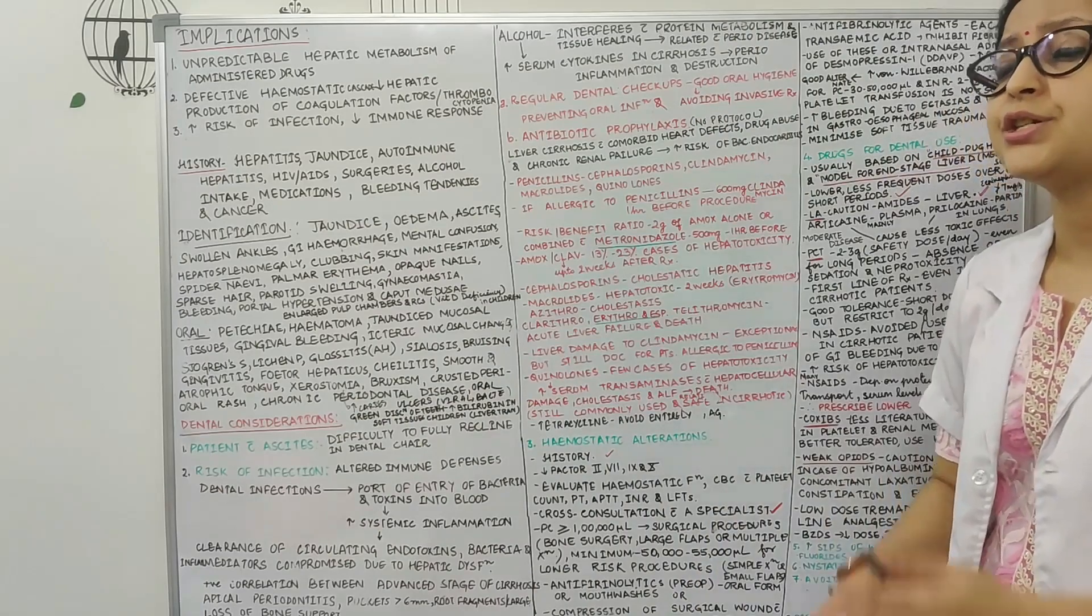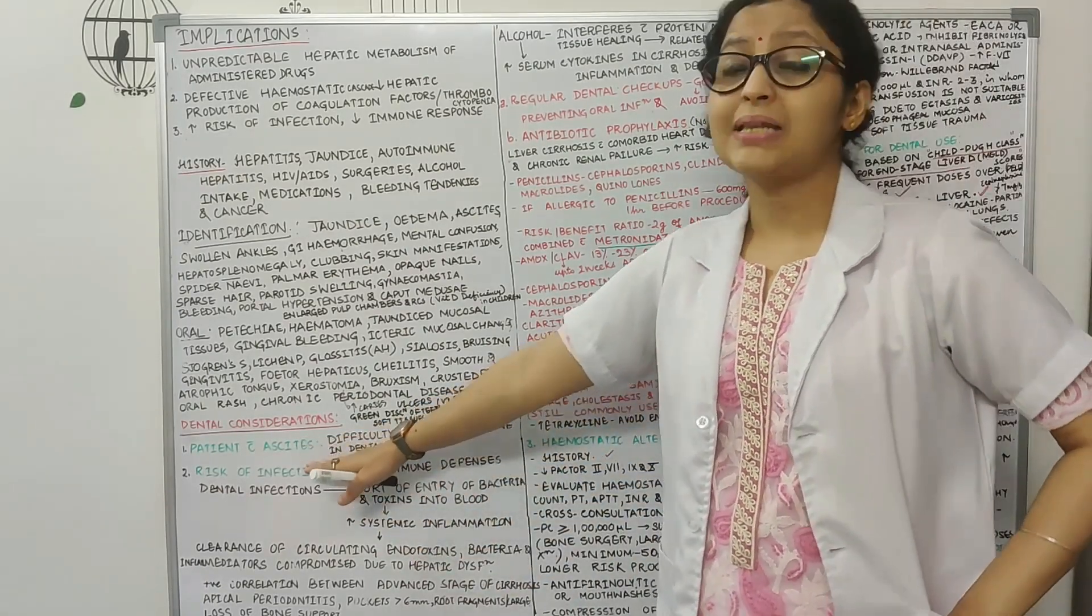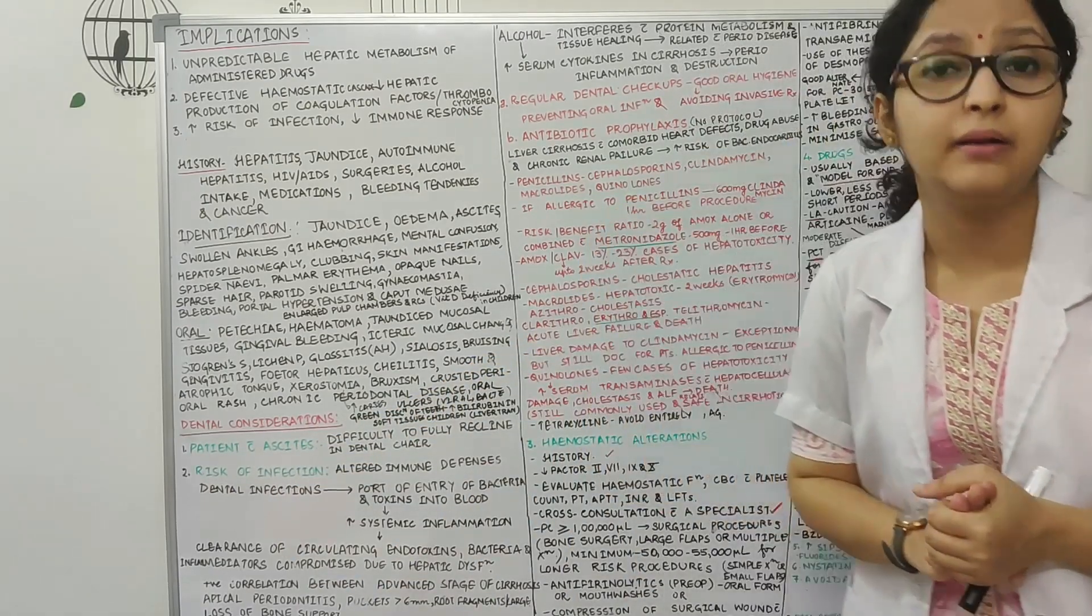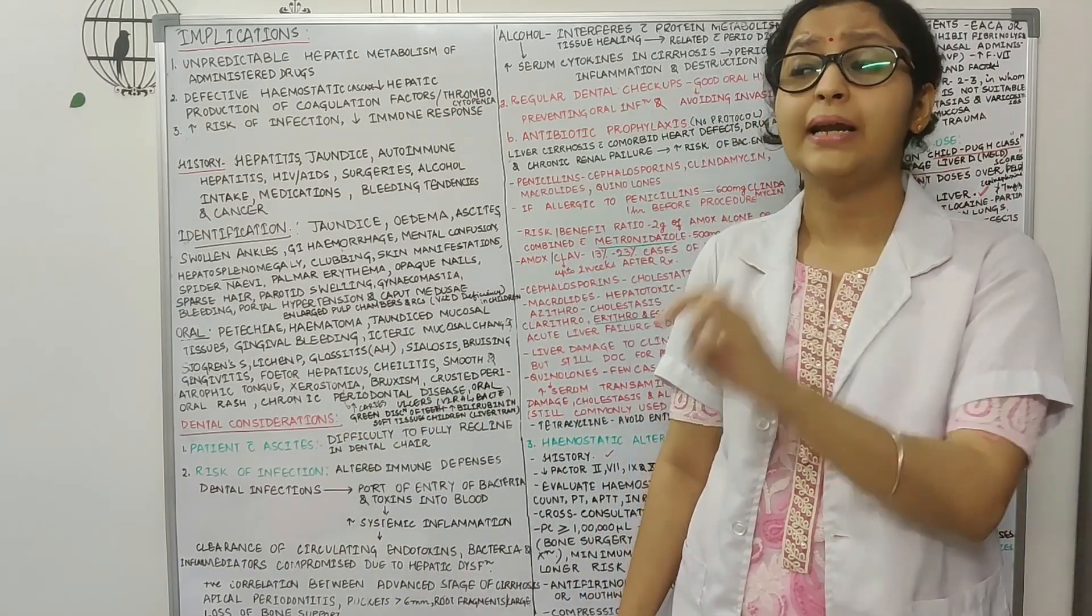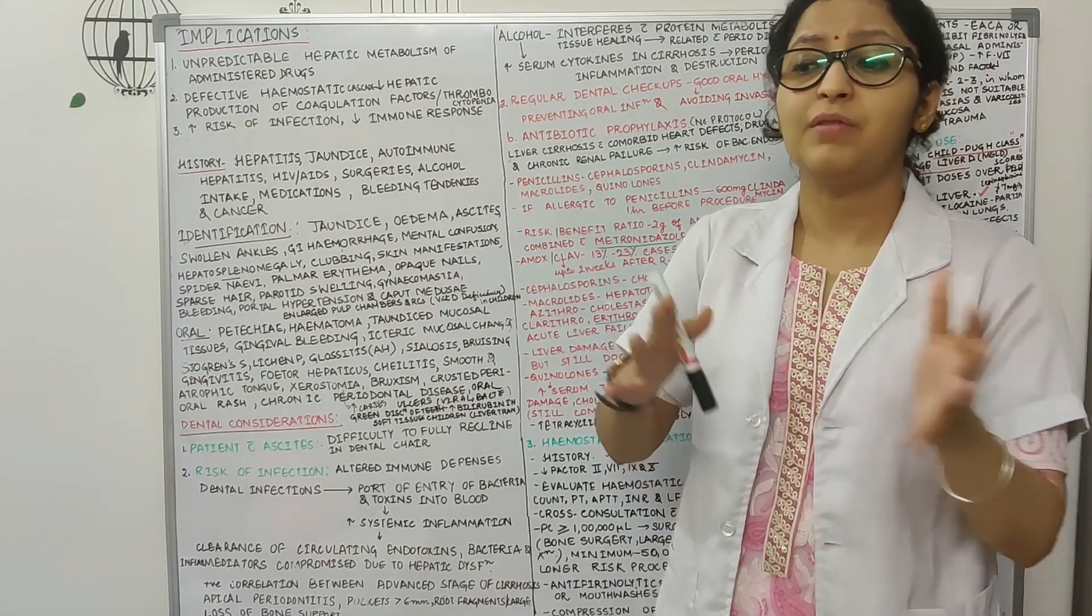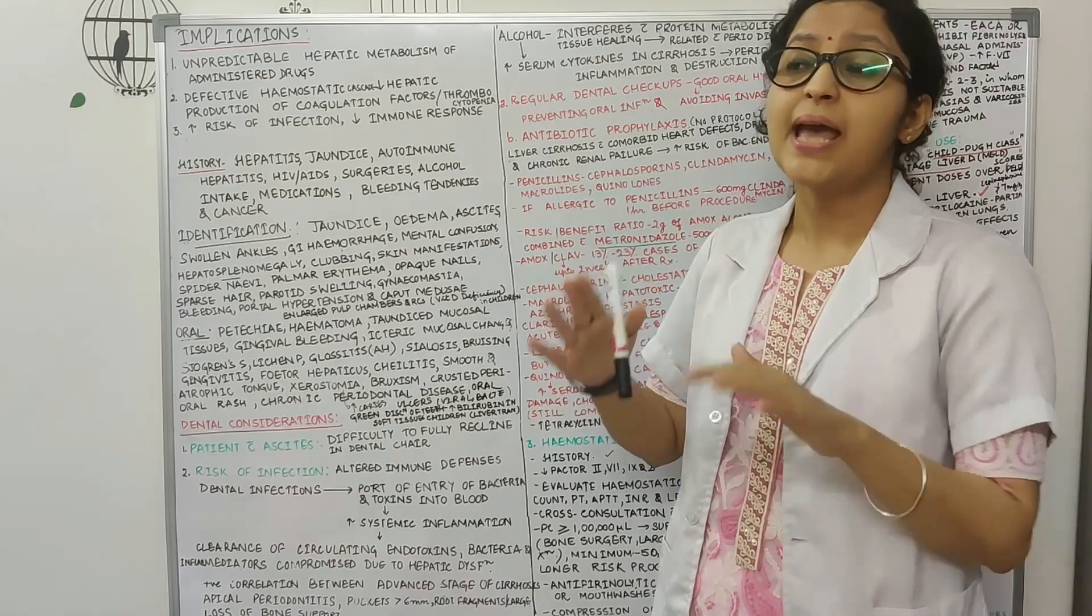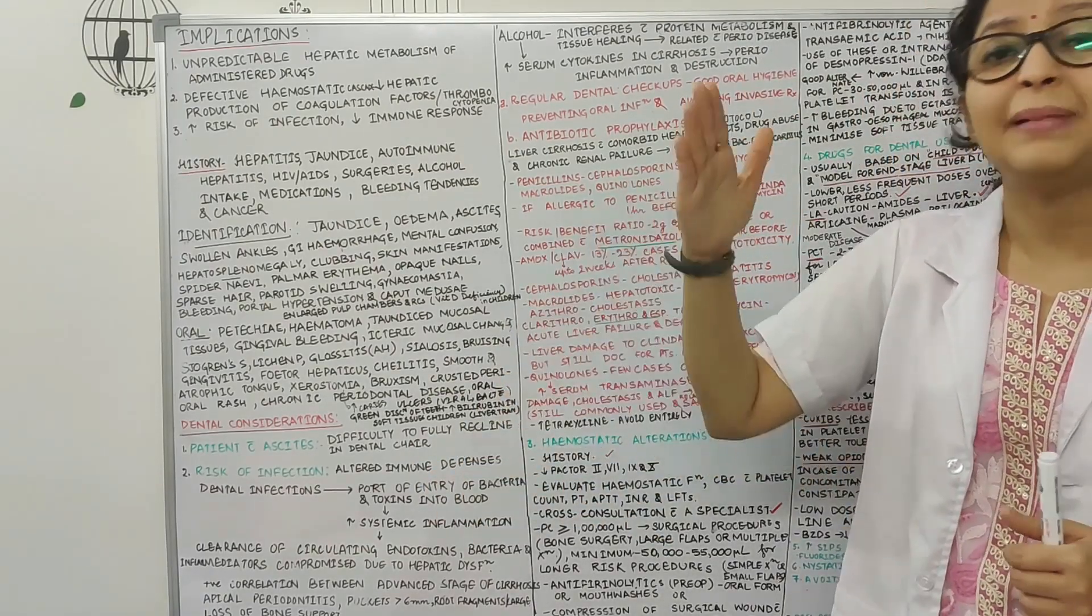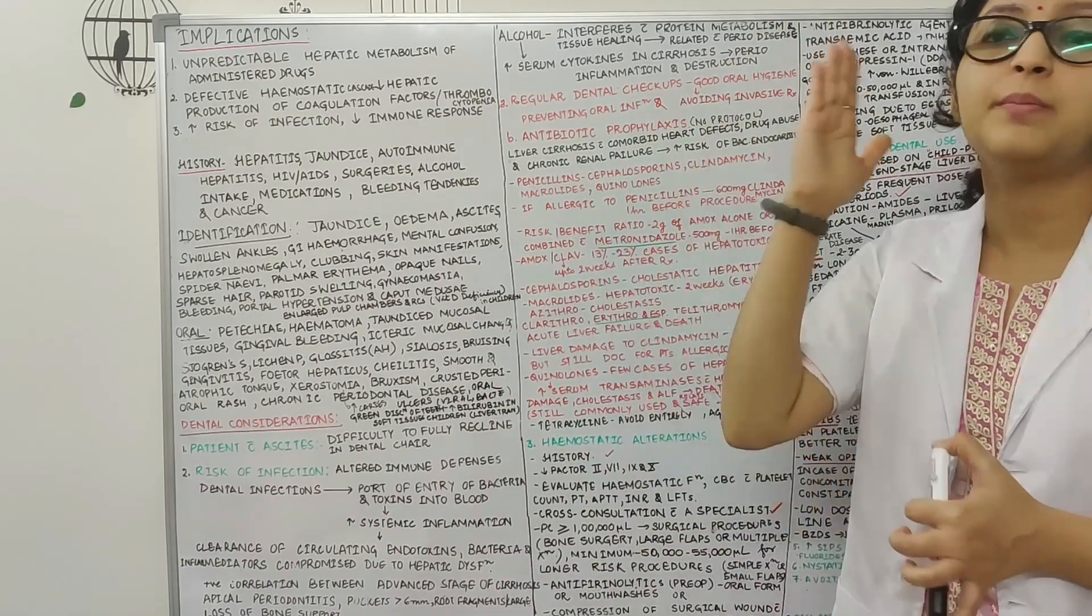Then coming to the dental considerations, the first dental consideration is that the patient with ascites, it is very difficult to fully recline the chair in some dental procedures. So when you are treating a patient with ascites, the dental chair position, you have to ask the patient in whichever position the patient has come, you have to lower the chair first and make the patient sit and then you should recline the chair and place the chair in the position in which the patient is most comfortable.